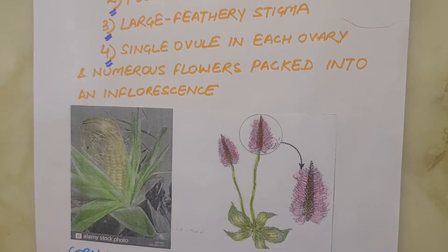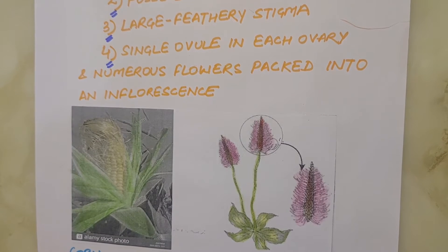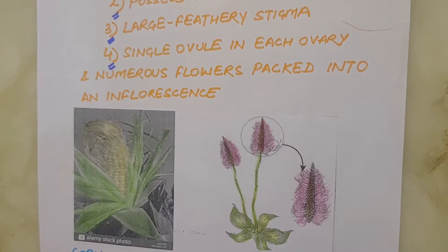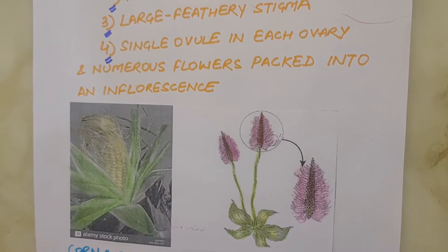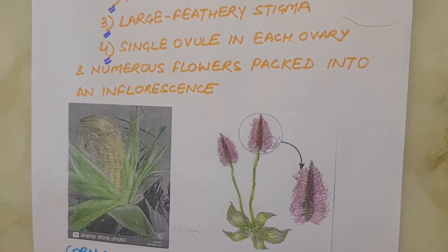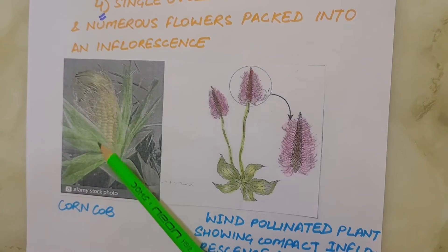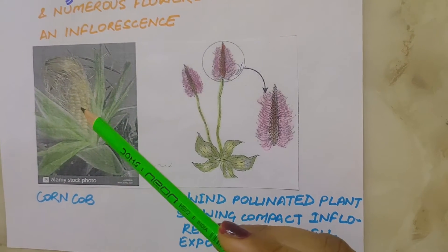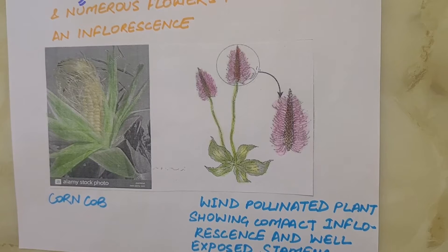The flowers are small and arranged in an inflorescence so that, even with only one ovule, many seeds can be produced. This also ensures efficient pollination leading to fertilization without wastage. A familiar example is corn cob — the tassels you see are nothing but the stigma and style which wave in the wind to trap pollen grains. Wind pollination is quite common in grasses.